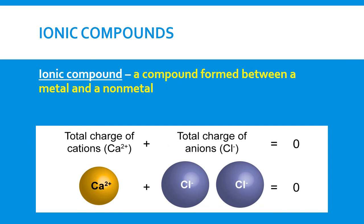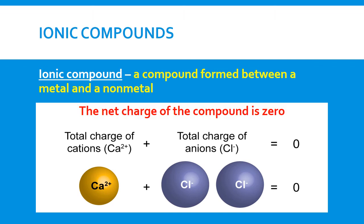Ionic compounds are compounds formed between a metal and a non-metal — the ions of these metals and non-metals combine to form a compound. The total charge of the cations plus the total charge of the anions equals zero. The overall positive charge equals the overall negative charge, resulting in a neutral compound with a net charge of zero.